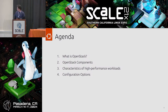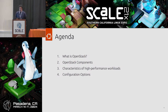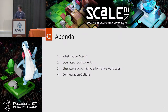We're going to go through four aspects: what is OpenStack and why it matters, some of the components that compose OpenStack clouds, what high-performance characteristics have and what metrics we care about — we're not going to go too deep on this, it's a presentation on its own — and finally, what configuration options OpenStack has to deal with all these aspects.